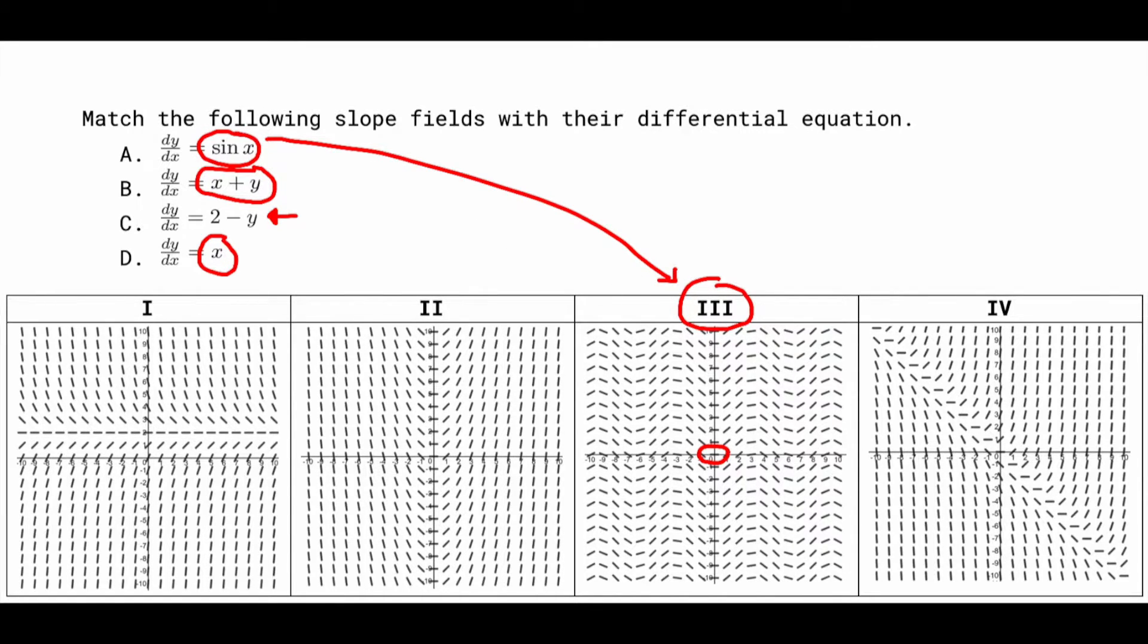All right the next one I'm going to do is the derivative is equal to x right here. An easy way to think about this one is you can actually do the anti-derivative pretty easily on this. It's just going to be x squared over 2 plus c. The only one that actually has a parabola if you look at it would be this second one right here. If you notice it kind of forms the shape of a parabola at each one of these x squared over 2 plus c. So this one would match up with number II right here.